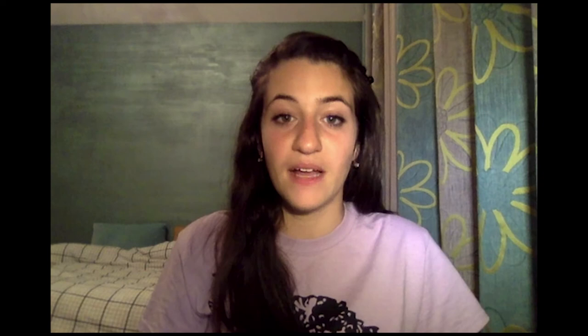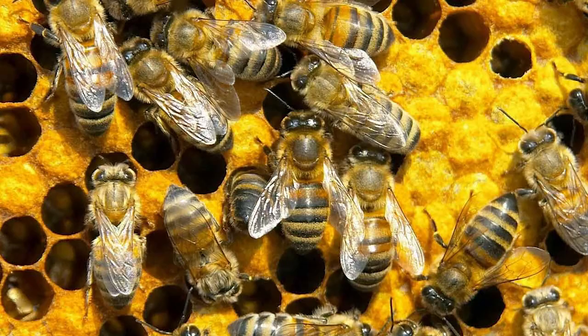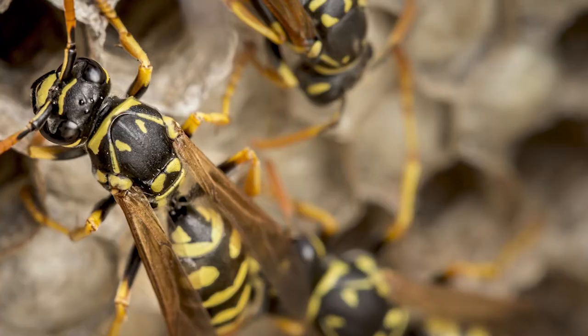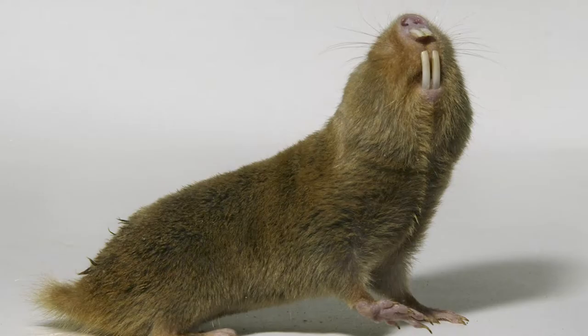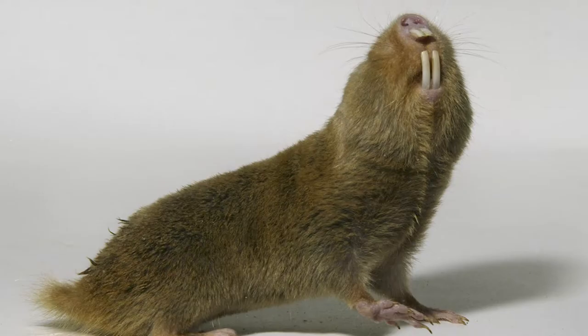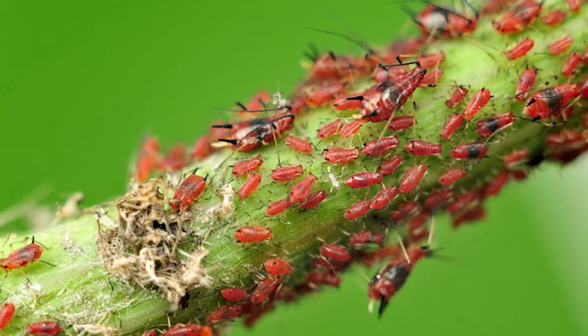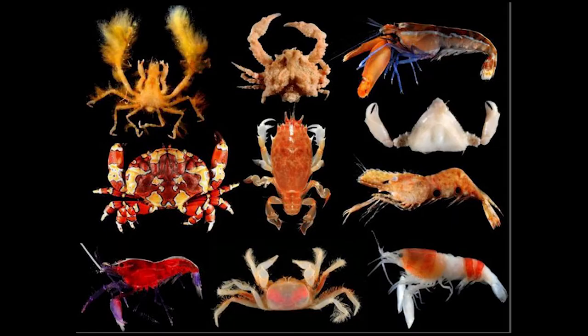Some examples of animals that participate in eusocial behavior are bees, termites, wasps, naked mole rats, Damaraland mole rats, aphids, thrips, crustaceans, and arthropods.